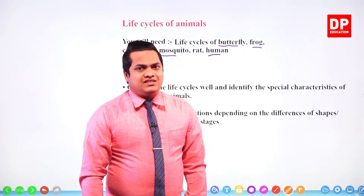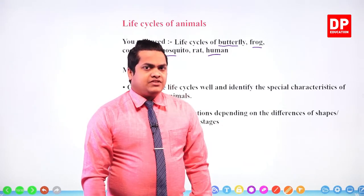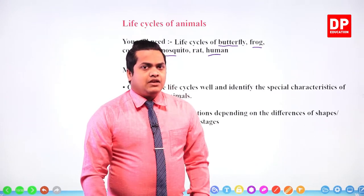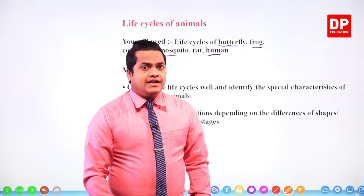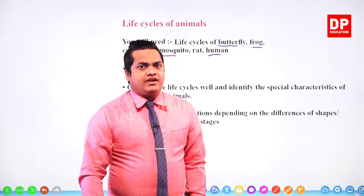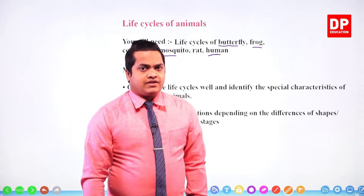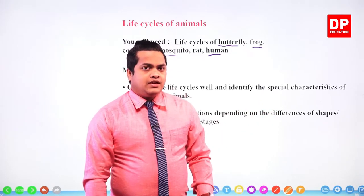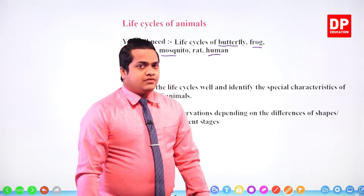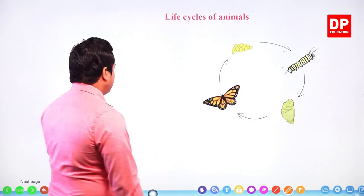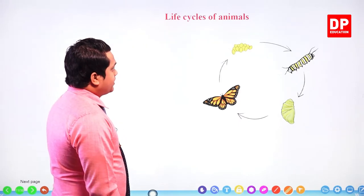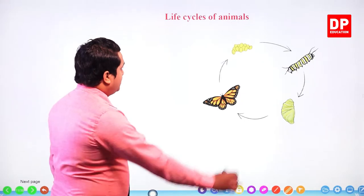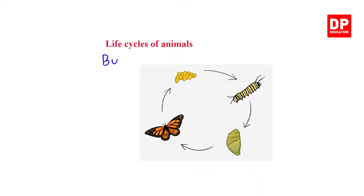That is how to conduct the activity — very simple. Now let's observe these images. We'll identify what are the stages. We have already identified in several animals their patterns. So let's once again observe their patterns in their life cycles and see what are the special cases. First of all, the life cycle of butterfly is given.